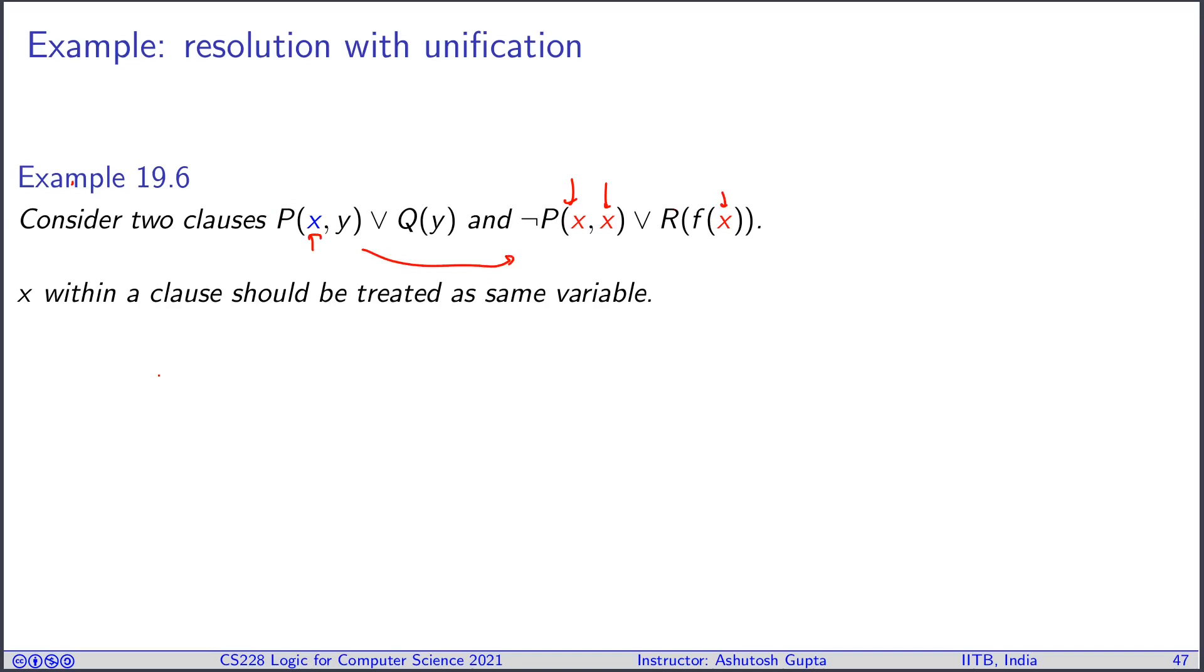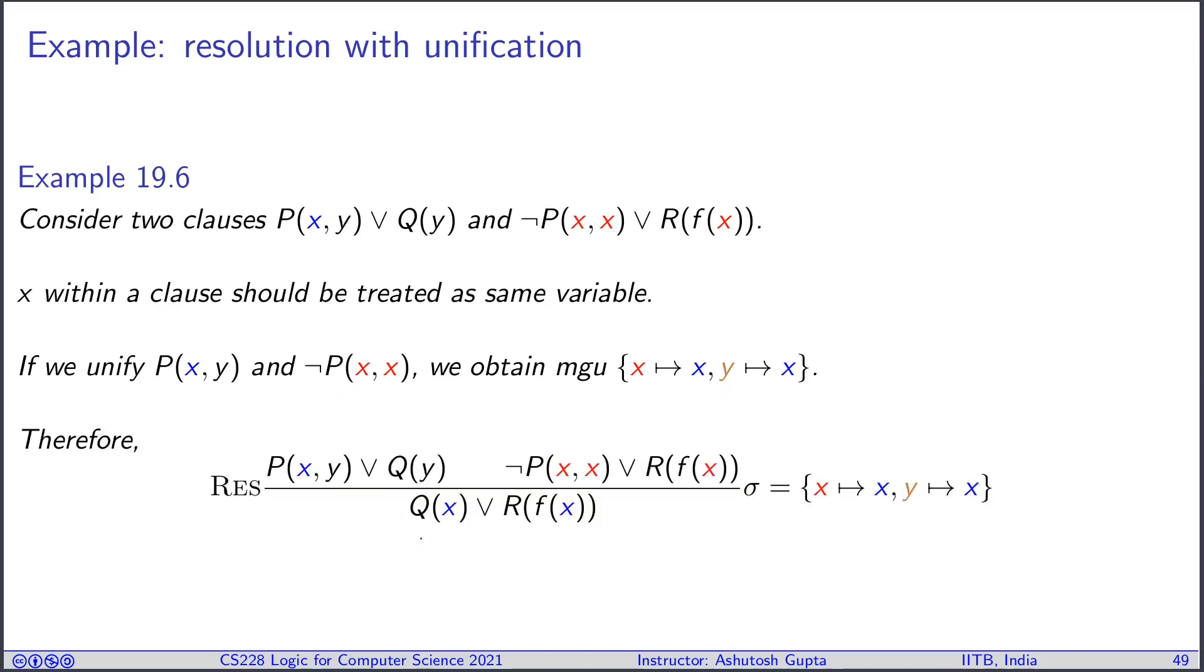If we unify P(X,Y) and not P(X,X), we obtain X maps to X and Y maps to blue X. So we obtain this clause finally: Q(X) or R(F(X)). So you get this output.